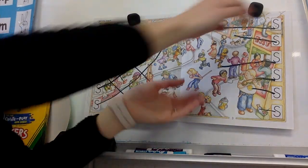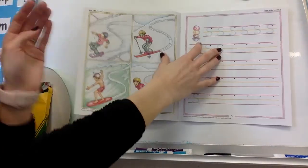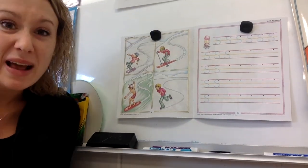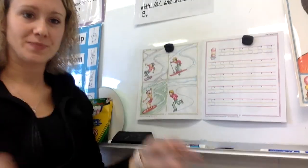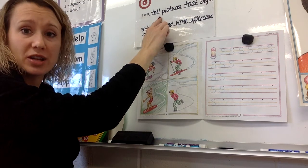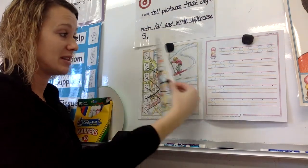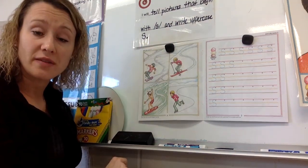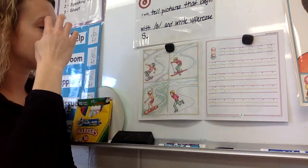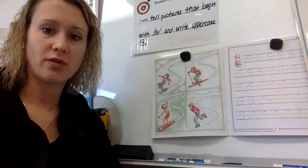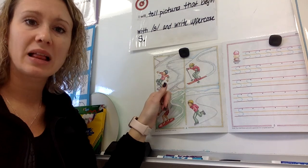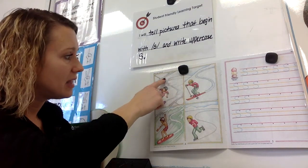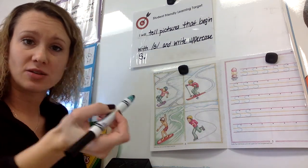Park your pencil. You're going to turn to page four. So we told pictures that started with the letter S and we drew a line to them — we did that part of our learning target. This is going to help us write uppercase S, the last part of our learning target. What is Sal doing here on page four? He's skateboarding. Do you see that line he has behind him? We're going to trace that with our pencil. Watch me first — park your pencil and watch me. You're going to stay in those little lines and trace them down.